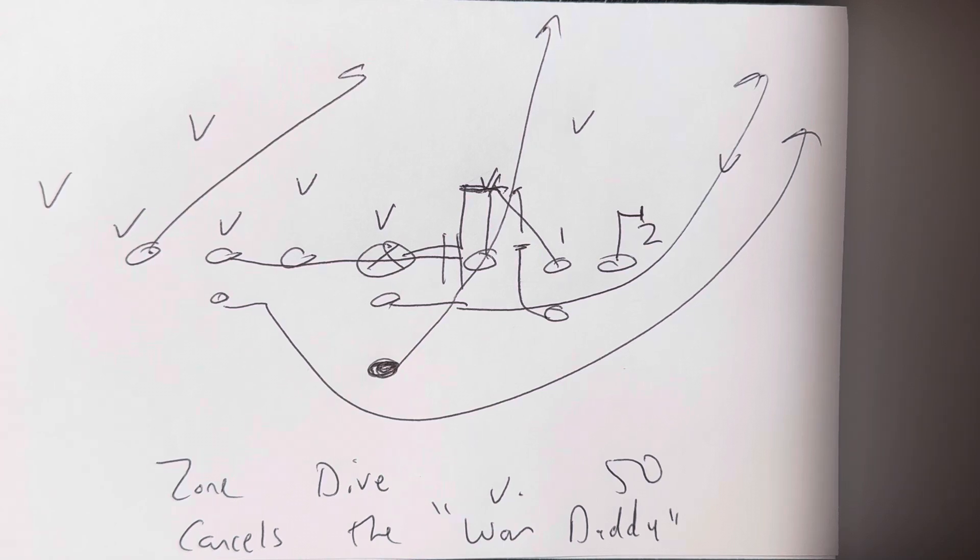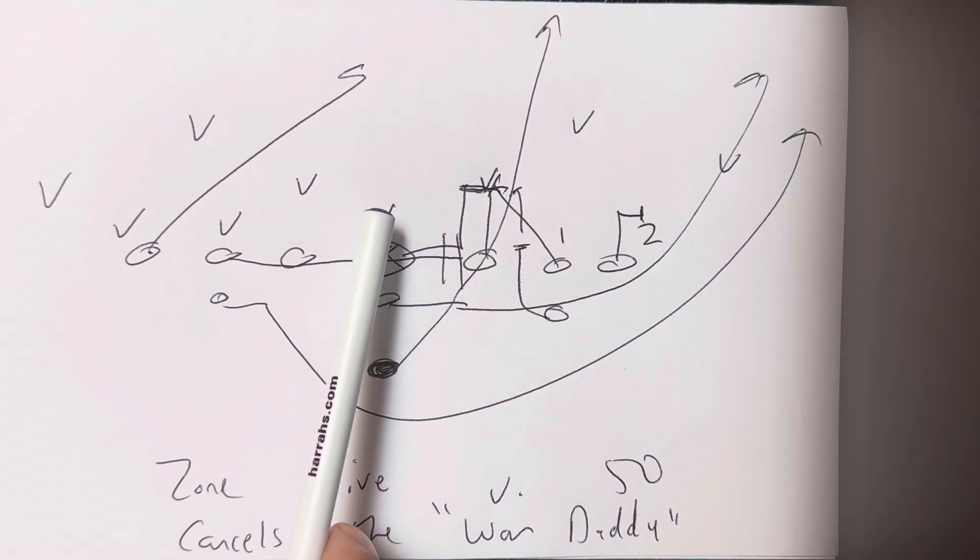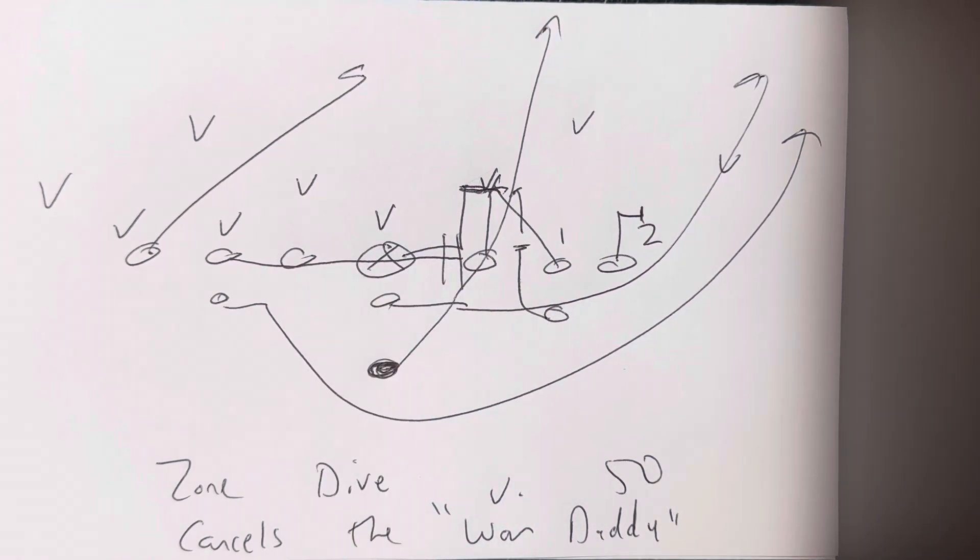The biggest issue that Paul Johnson and his group had when running inside veer, and I was told this by several staffers, was the zero technique. By the zero technique, controlling the center, it controlled the inside veer.